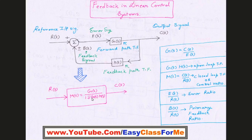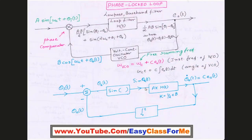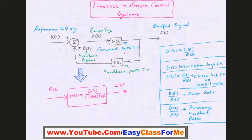There are other terms like error ratio and primary feedback ratio to keep in mind. Phase-locked loop in general is a nonlinear device, so we first try to convert it into an LTI system. When converted into an LTI system, linear control system principles can be applied. Now we come to the phase-locked loop structure. Here also you can see there are two transfer functions — one for the forward path and one for the feedback path — but there are some differences from the standard control system diagram.